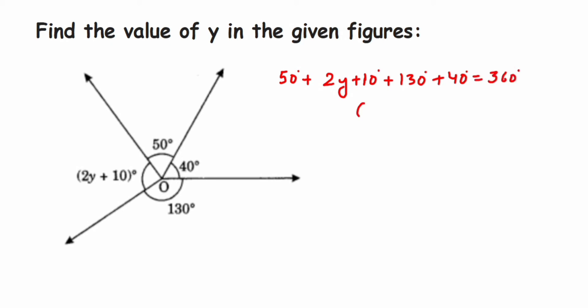Now we're going to add them up. We're going to add the constants: 50 plus 10 is 60, 60 plus 40 is 100, 100 plus 130 is 230. So 230 plus 2y, there's no other variable, only 2y is there, and this is equal to 360 degrees.